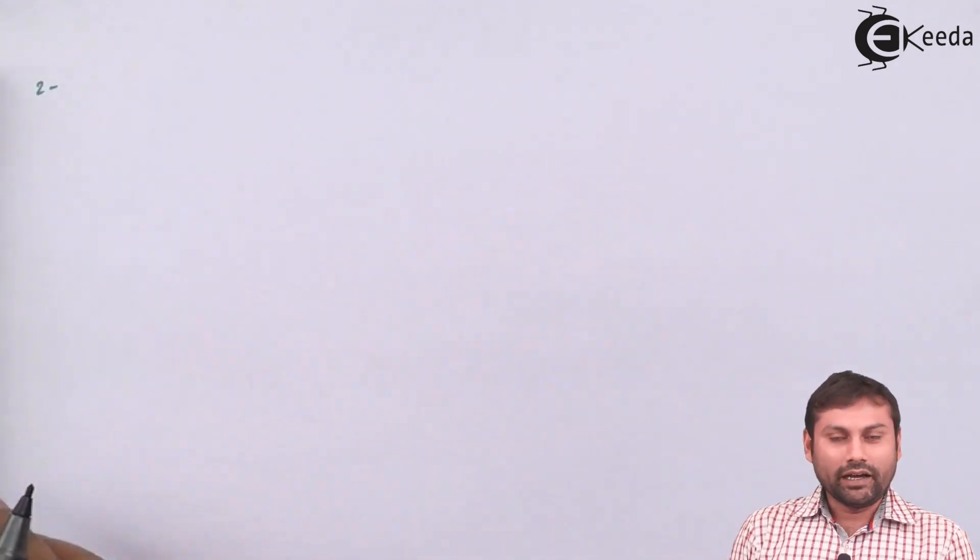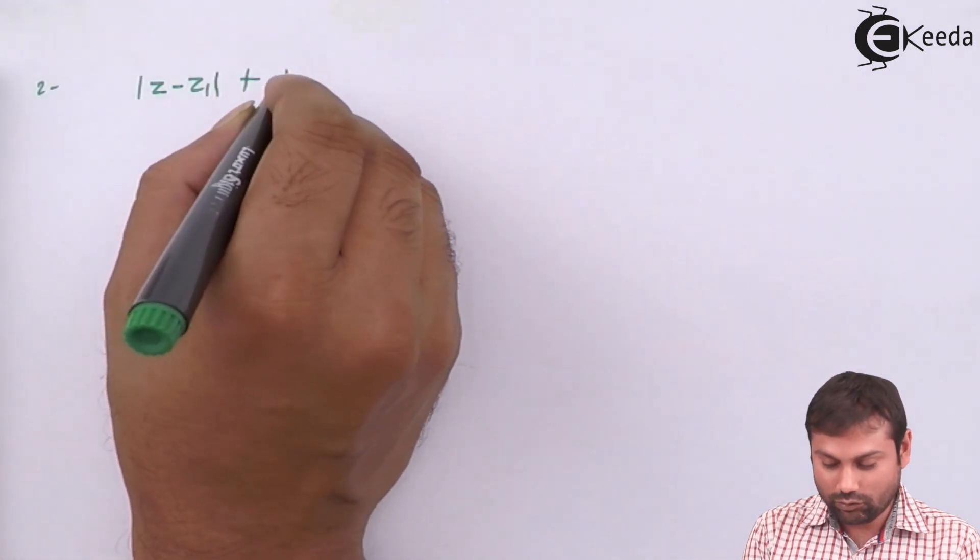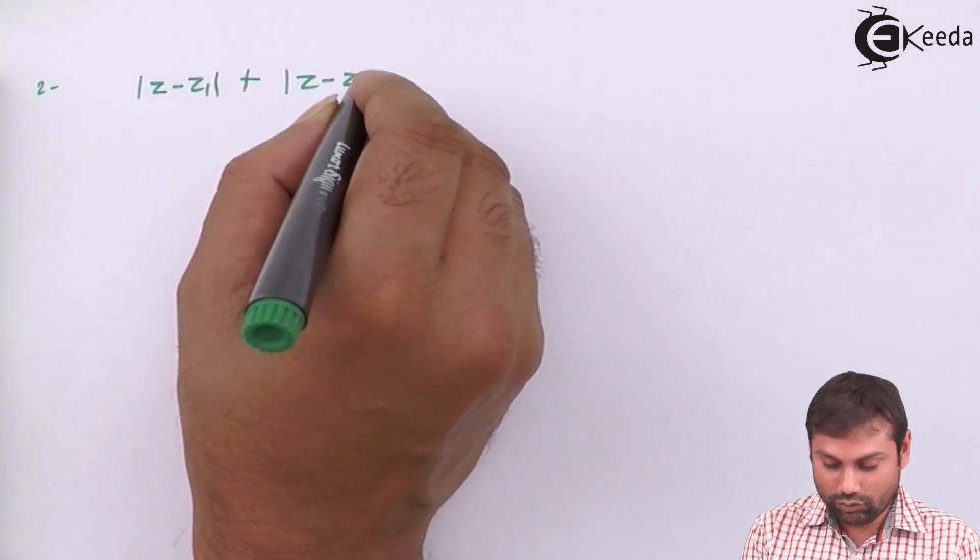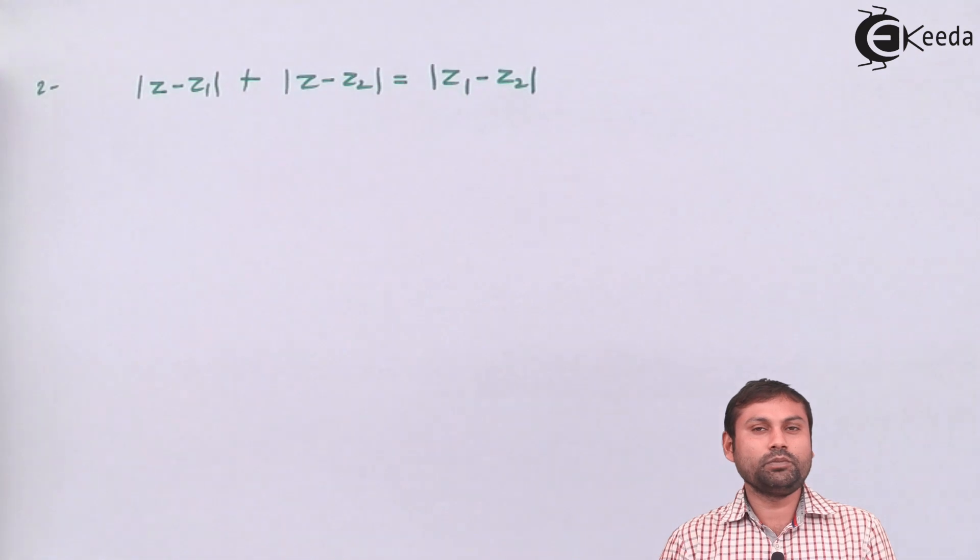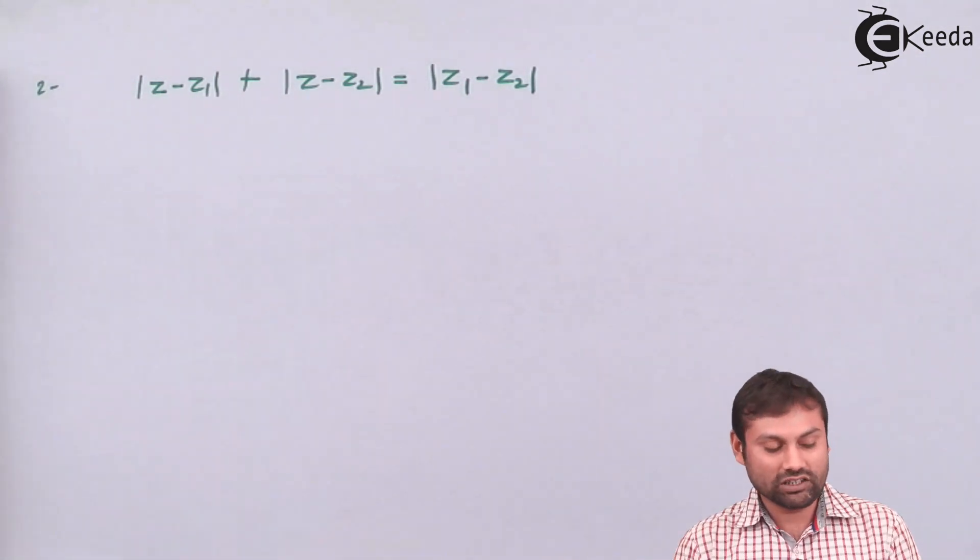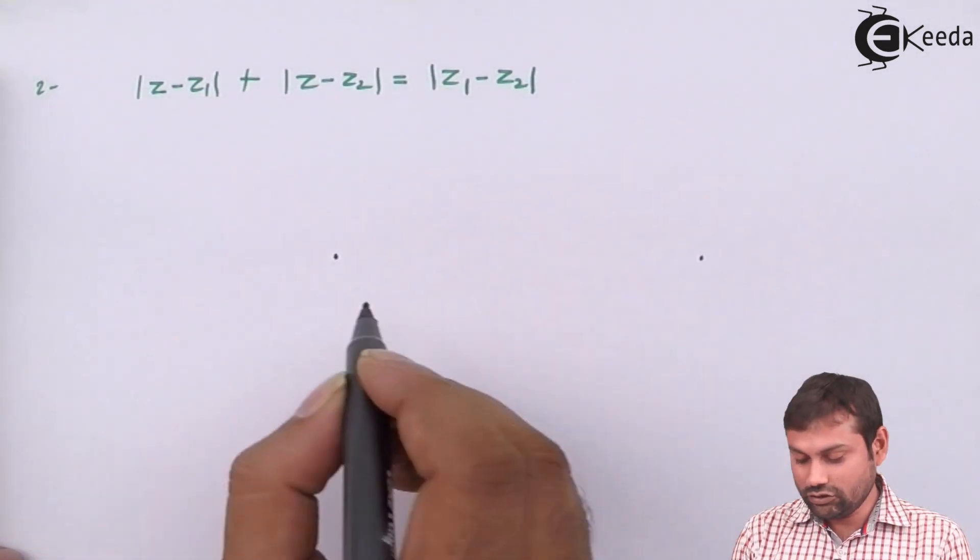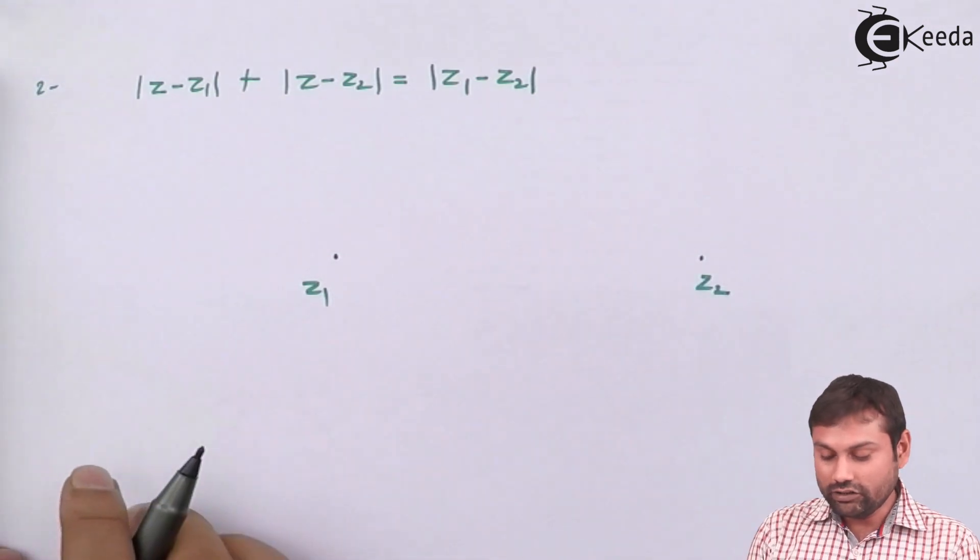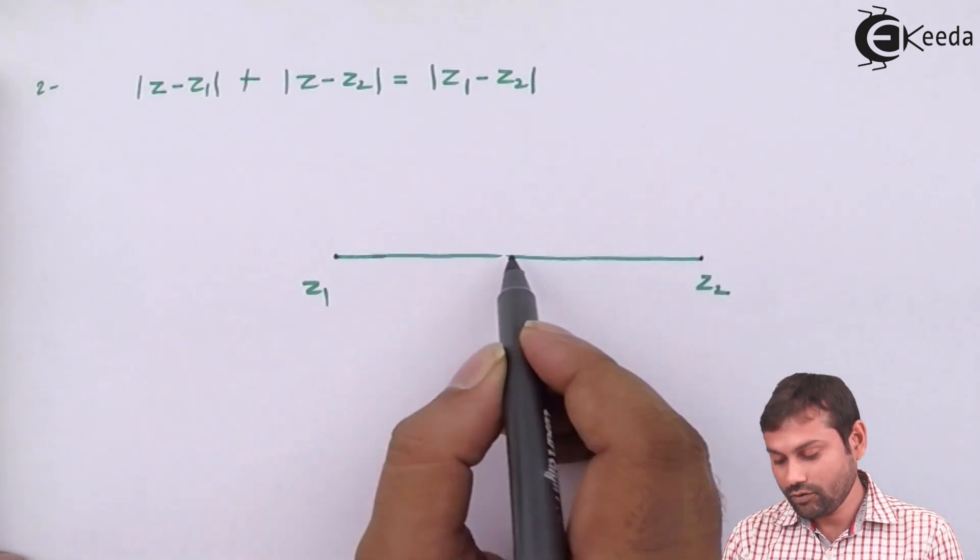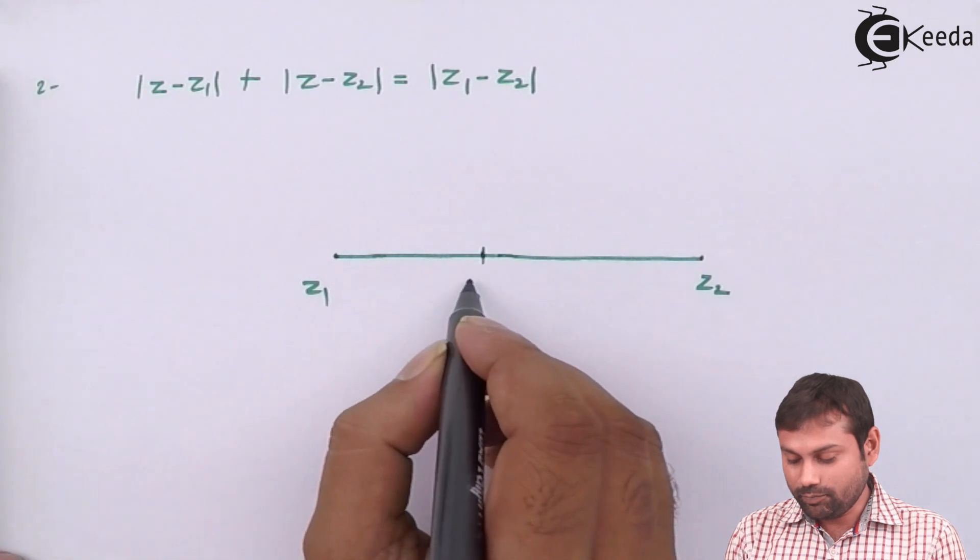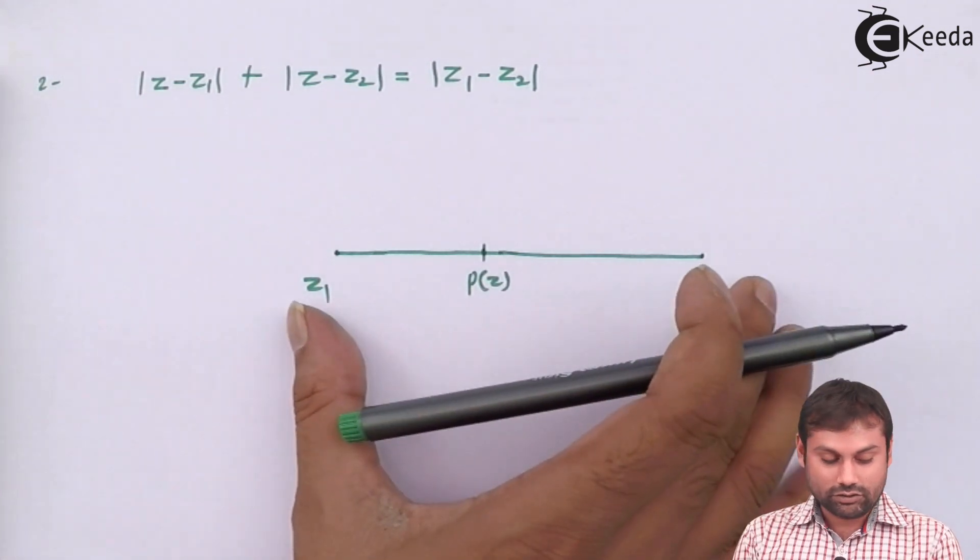If, again equation is written |z - z1| plus |z - z2| equals to |z1 - z2|. If in complex plane, in argand plane, this equation is written, what locus does it represent? We can see that if suppose these two points are z1 and z2, and I join this line segment, and I take P(z) here.